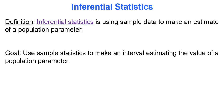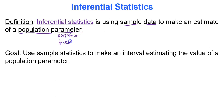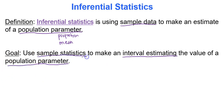This is our first dive into what is called inferential statistics — basically using sample data to make an estimate about a population parameter. In this course, we are specifically going to look at the population proportion and the population mean. Those are the two parameters we're concerned with, and we're going to use sample statistics to make an interval estimating the value of a population parameter.